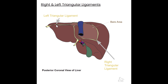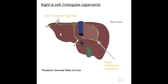Flipping to the anterior view, we can see the falciform ligament. The falciform ligament sits on the anterior side and connects the liver to the abdominal wall. It is continuous with the coronary ligaments and the ligamentum teres. The falciform ligament is continuous with the coronary ligament, connecting to the left triangular ligament and over to the right triangular ligament. These four ligaments form a continuous band connecting to the diaphragm and the abdominal wall.